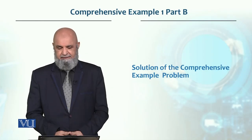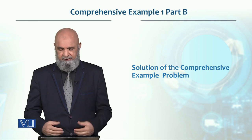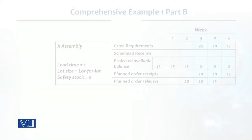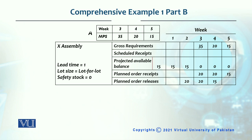Let's look at the solution of this comprehensive example problem which we have discussed. First we have to develop X assembly — X is the level 1 sub-assembly, so we have to consider level 1. These are A requirements from the MPS, which is called Master Production Schedule. A is your end product.